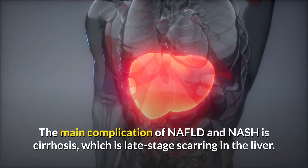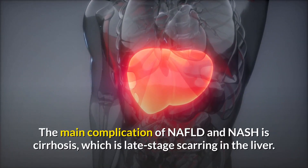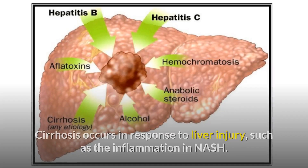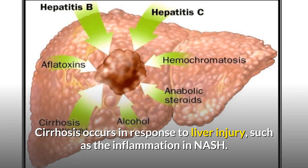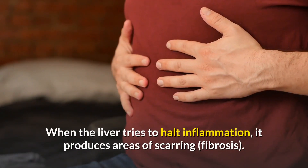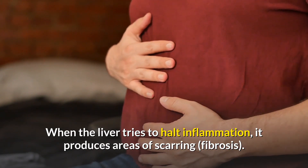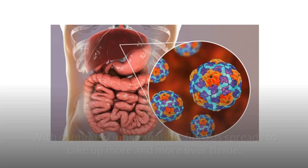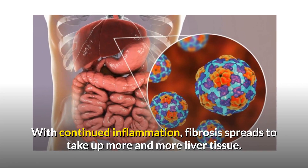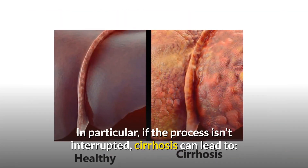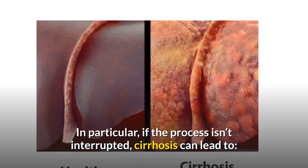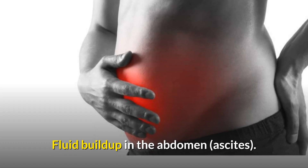The main complication of NAFLD and NASH is cirrhosis, which is late-stage scarring in the liver. Cirrhosis occurs in response to liver injury, such as the inflammation in NASH. When the liver tries to halt inflammation, it produces areas of scarring. With continued inflammation, fibrosis spreads to take up more and more liver tissue. If the process isn't interrupted, cirrhosis can lead to fluid buildup in the abdomen.